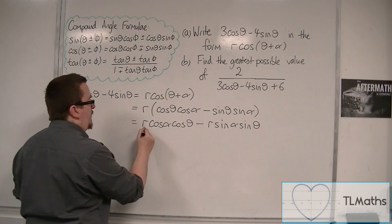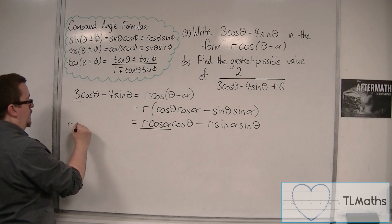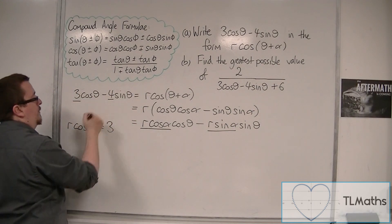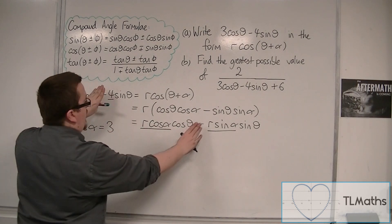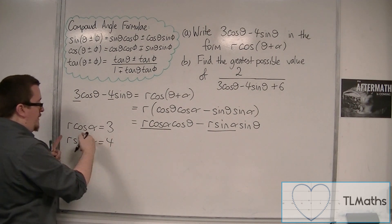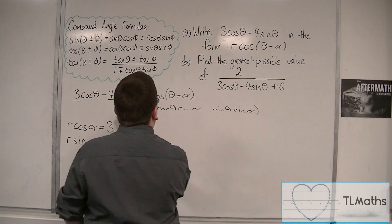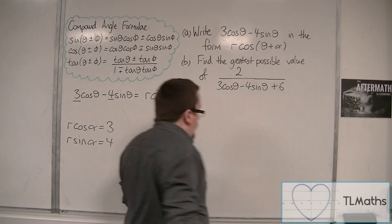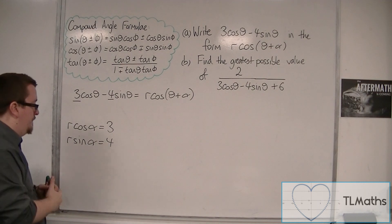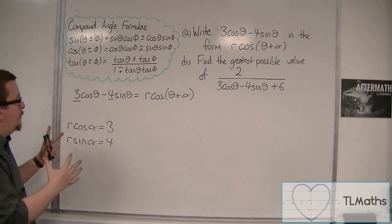We put it in this particular way so that I can compare r·cosα with the 3, so r·cosα must equal 3, and r·sinα with the 4. Because those minus signs are there, I just need r·sinα equal to 4 — there's no minus sign that appears here. If you're able to jump straight from this to these two equations after practice, that's great — you don't have to keep writing out the compound angle formula mess.